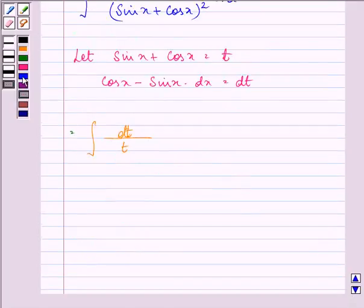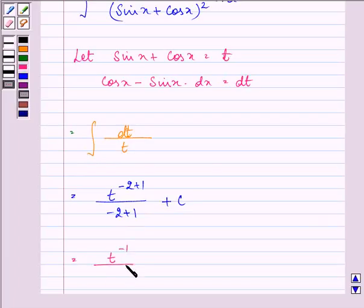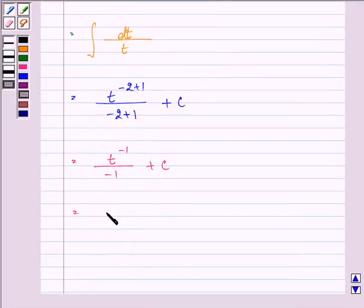So integrating the following function, we have t to the power minus 2 plus 1 divided by minus 2 plus 1 plus c. So we have t to the minus 1 divided by minus 1 plus c, which can be written as minus 1 over t plus c.